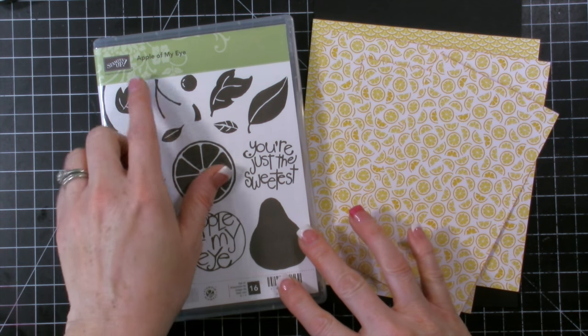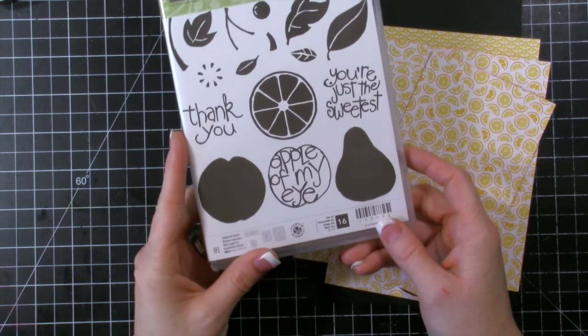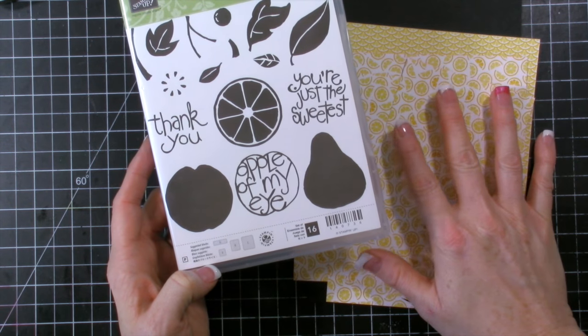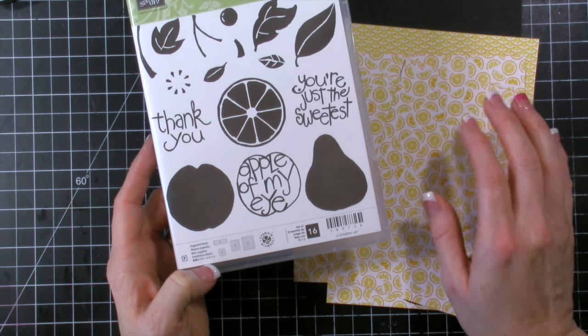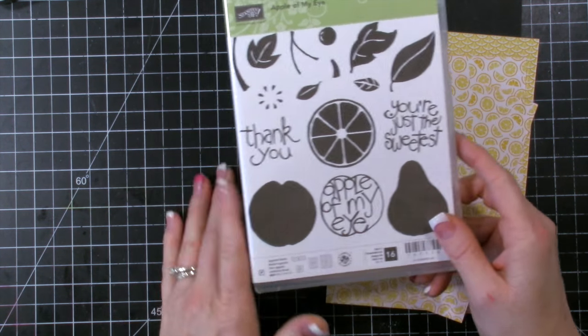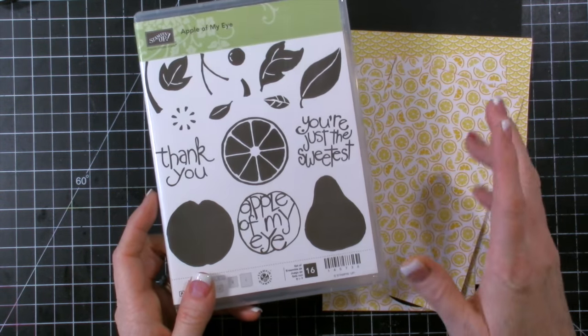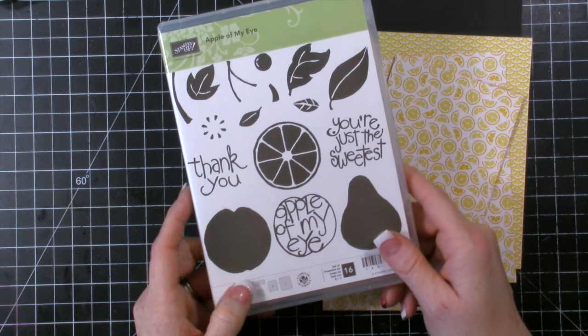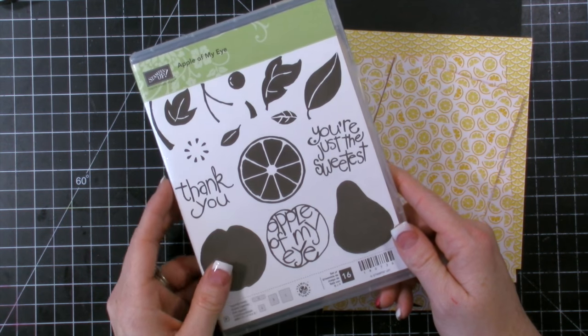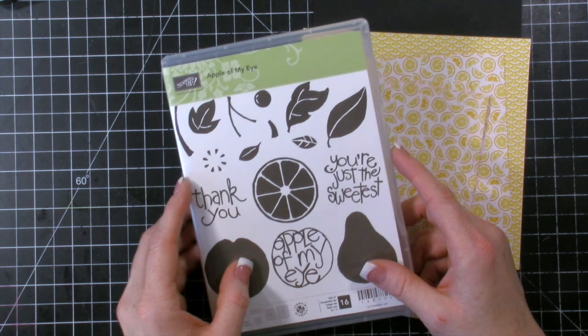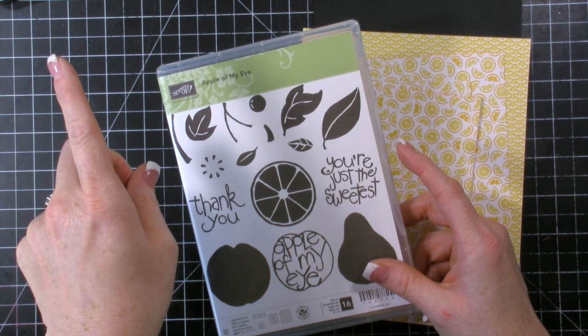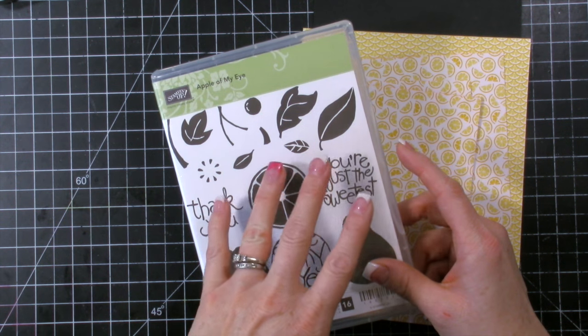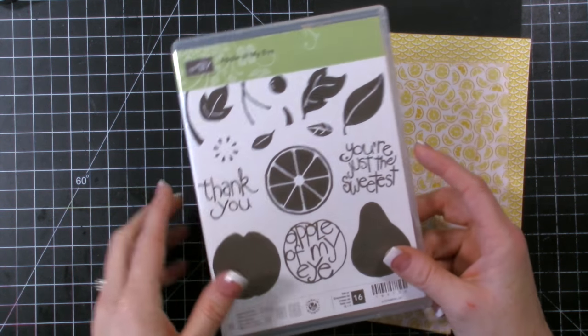Today I'm using Apple of My Eye, a stamp set from the Occasions catalog. I'm also doing this project for the Global Design Project website. It's kind of a cased card this week, not really a card sketch, but a photo of a card that you case and put your own spin on it. All that information is over on my website. You can click right up here to get to the coordinating blog post, or you can click down in the YouTube description.